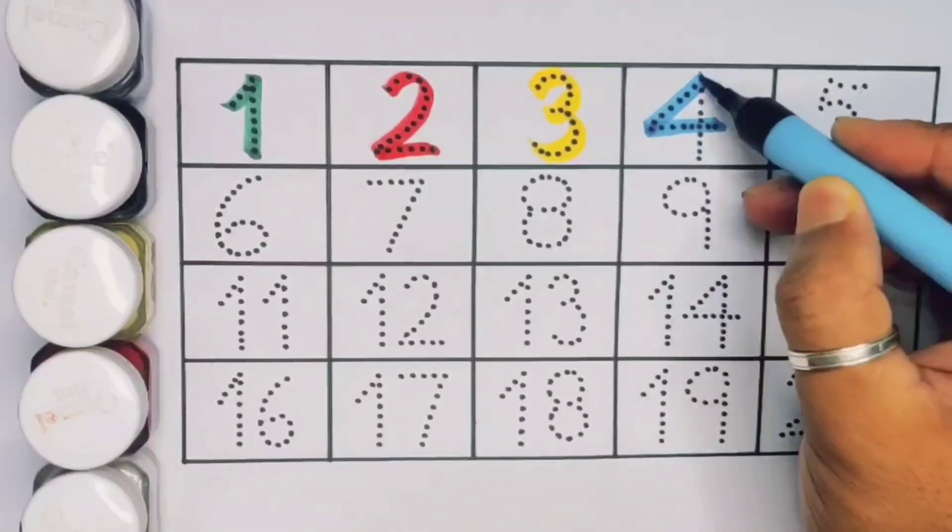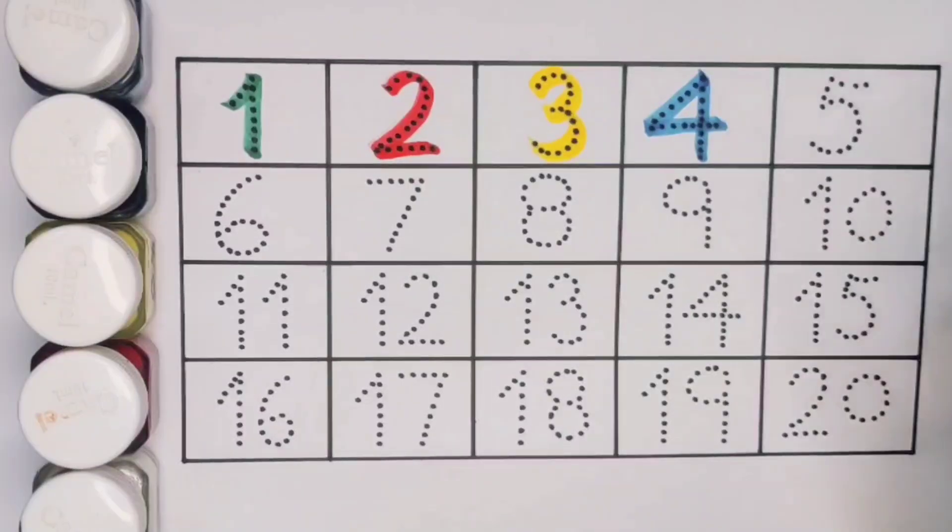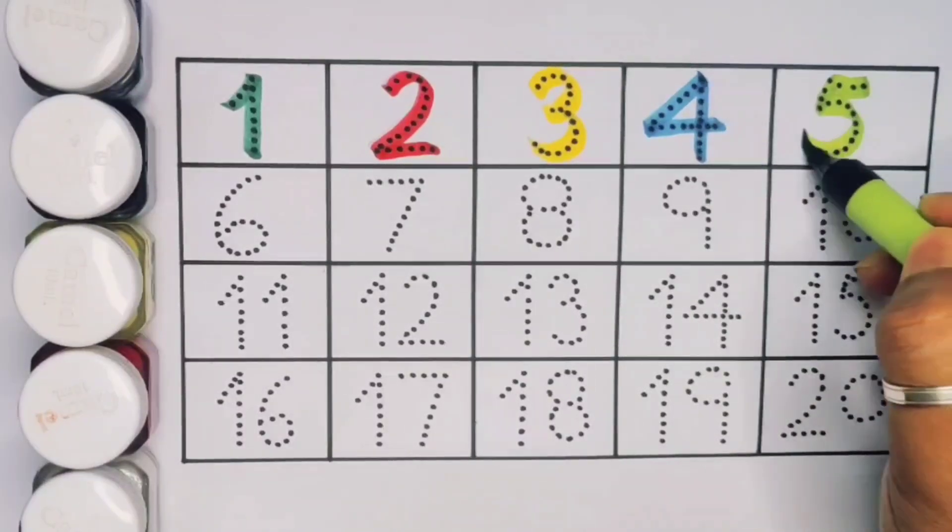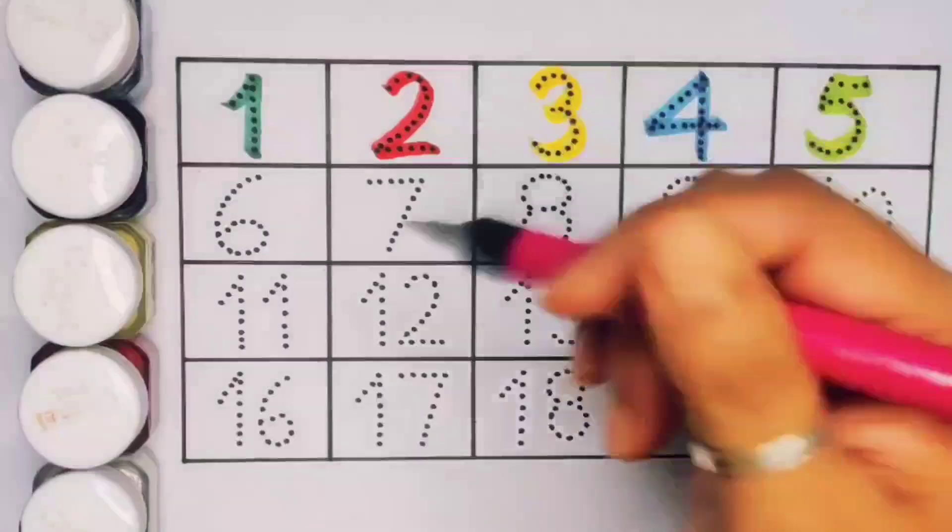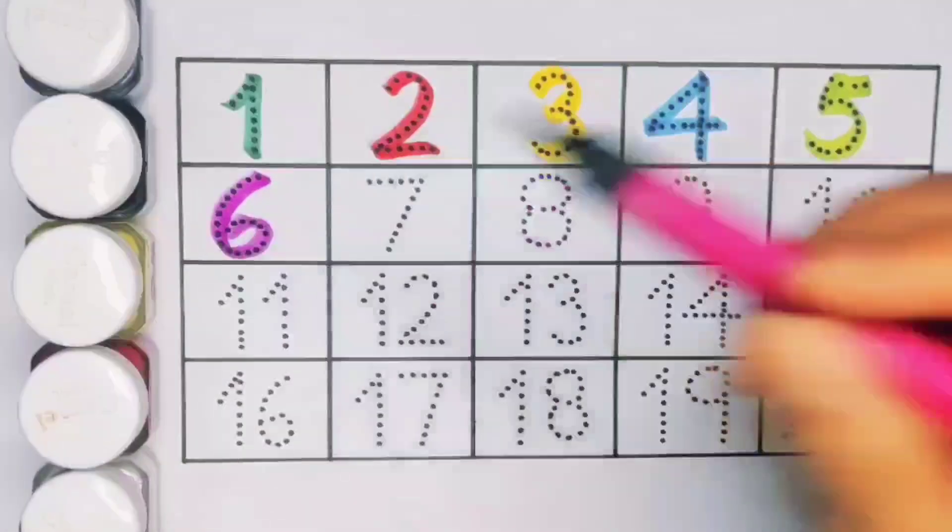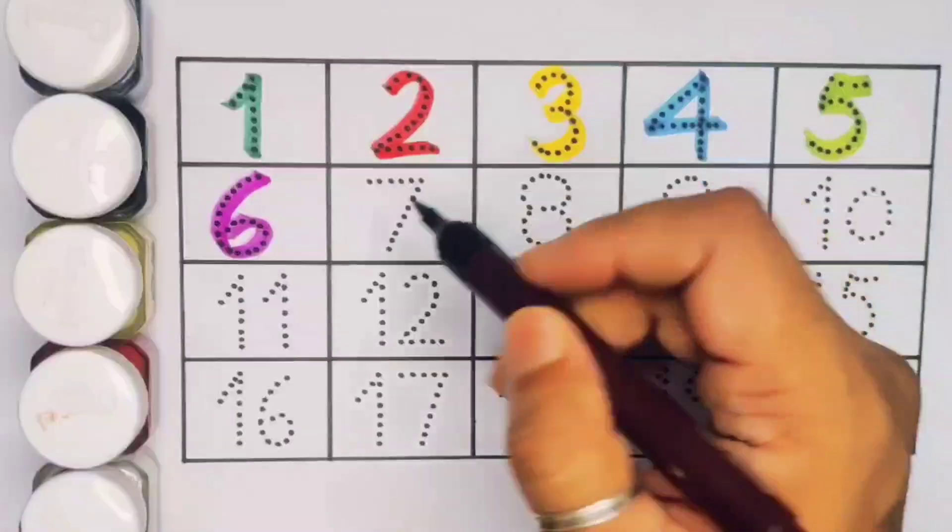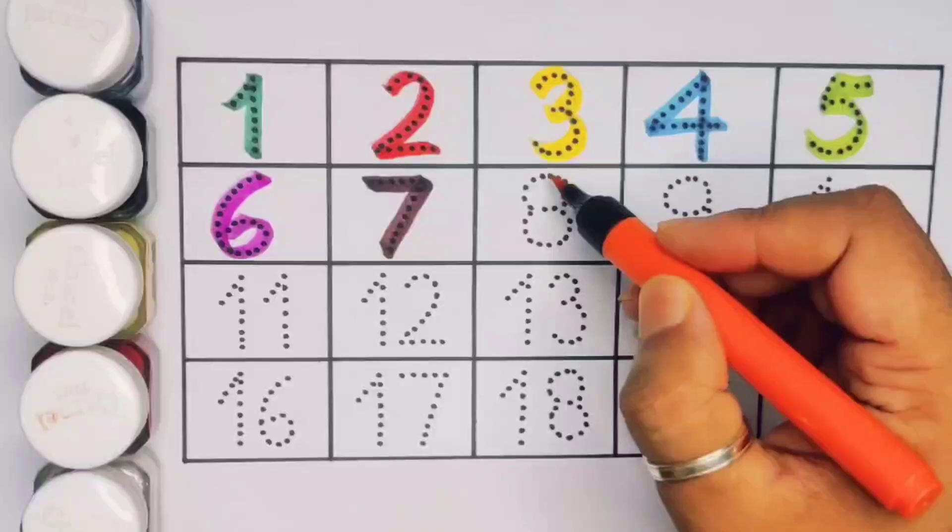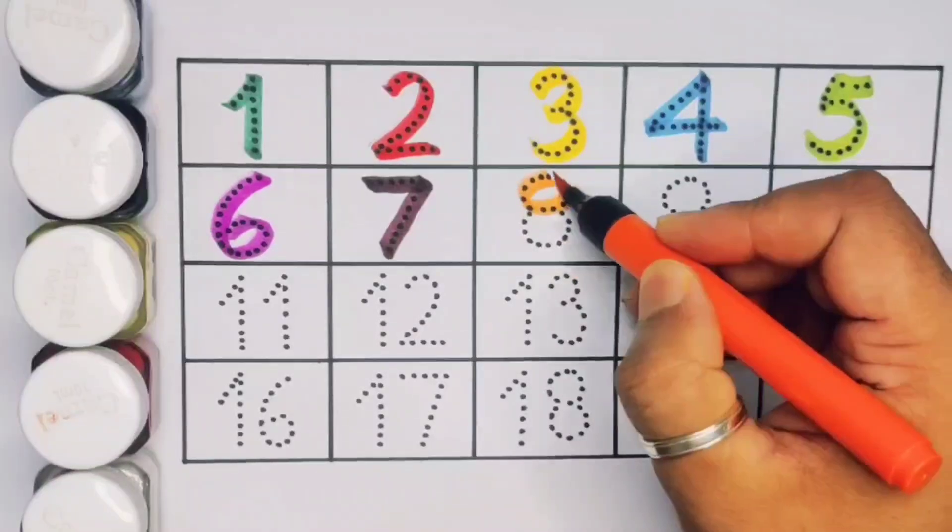Next kids 5, number 5. Next 6, number 6. Next kids 7, number 7. Next kids 8, number 8.